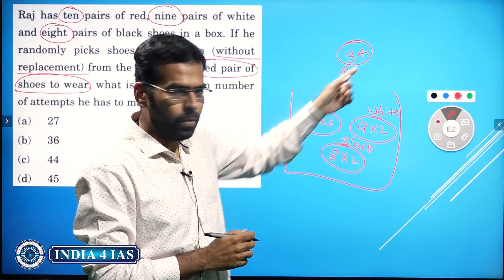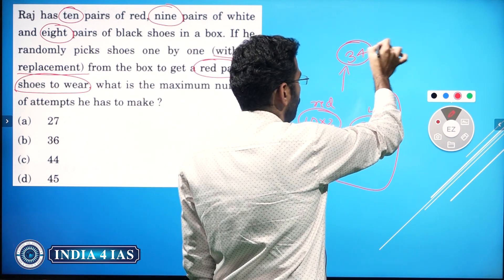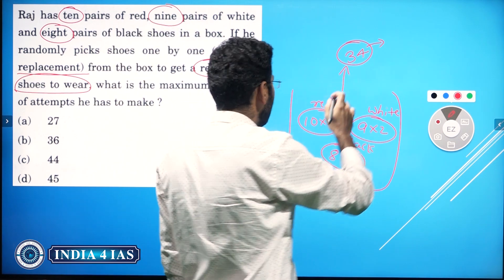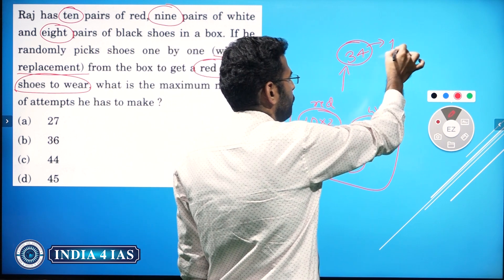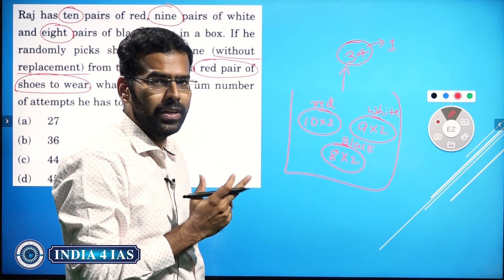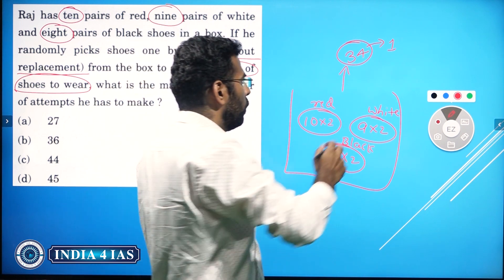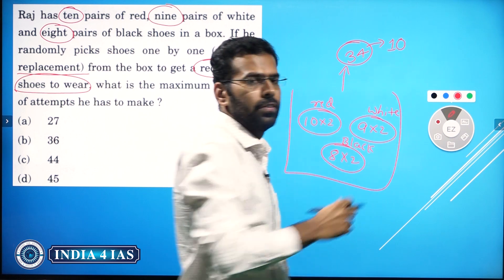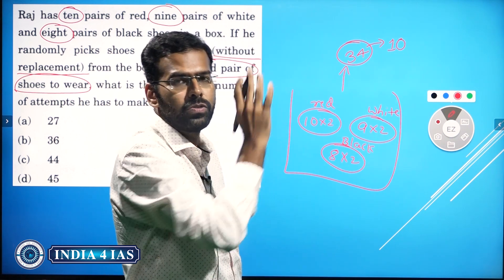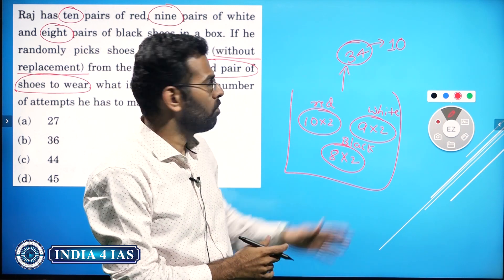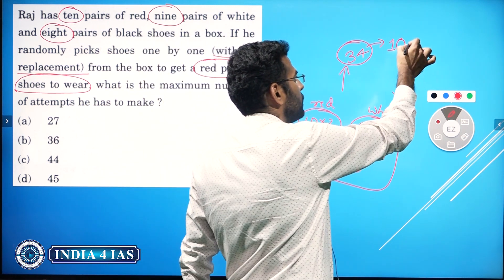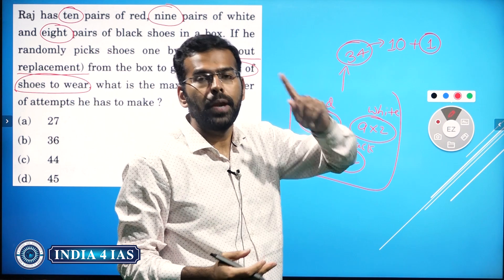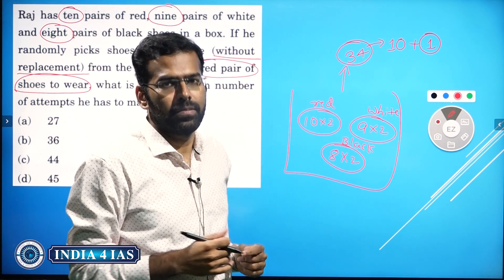So after 34, whatever shoes that you pick will be red - that is the best possible case. But here, let's say you pick up one which will be red, but you don't know whether it is left or right. Until then, you have to pick another ten. Best possible case: let's assume all those ten are left leg shoes. After this, whatever that you pick - the extra one - will be right, then you will have one pair of shoes to wear.